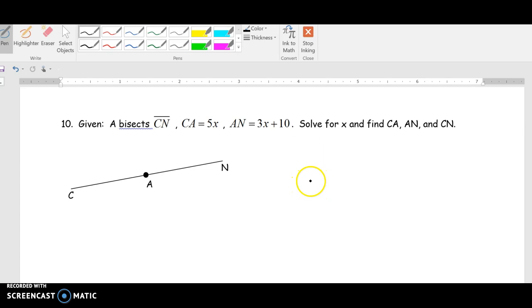Given A bisects CN, right, what you have to understand is anytime you see this word bisects, you get two congruent something. And if I'm bisecting a segment, I'm going to get two congruent segments.